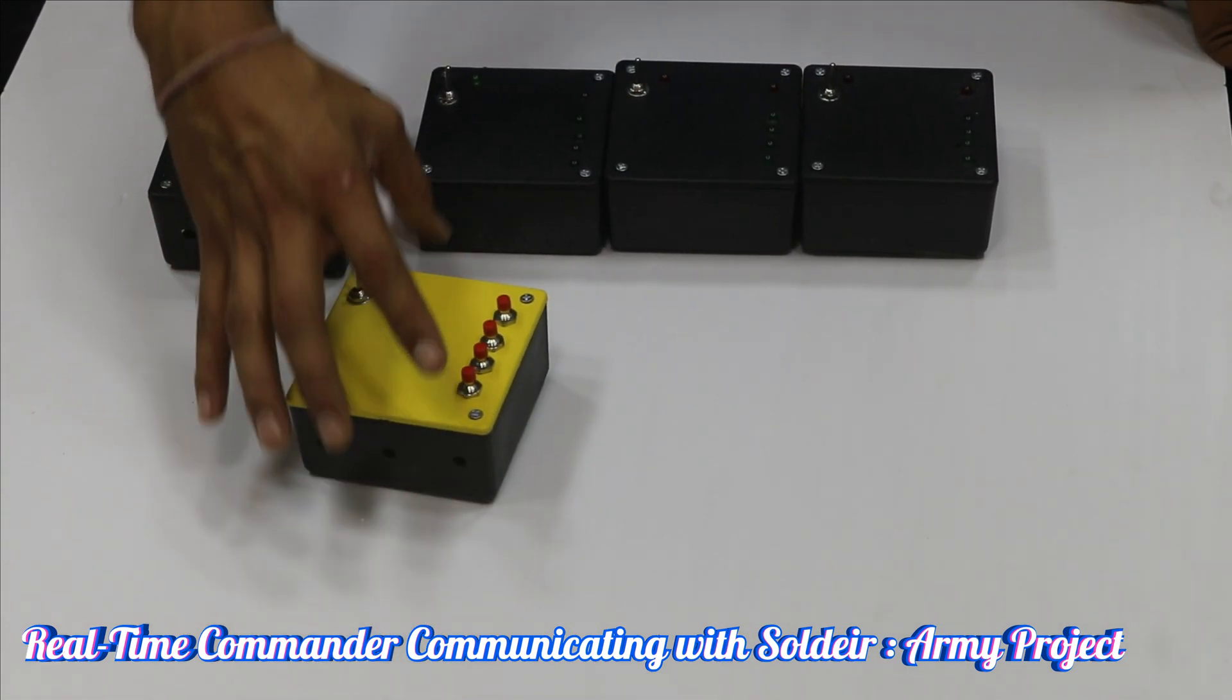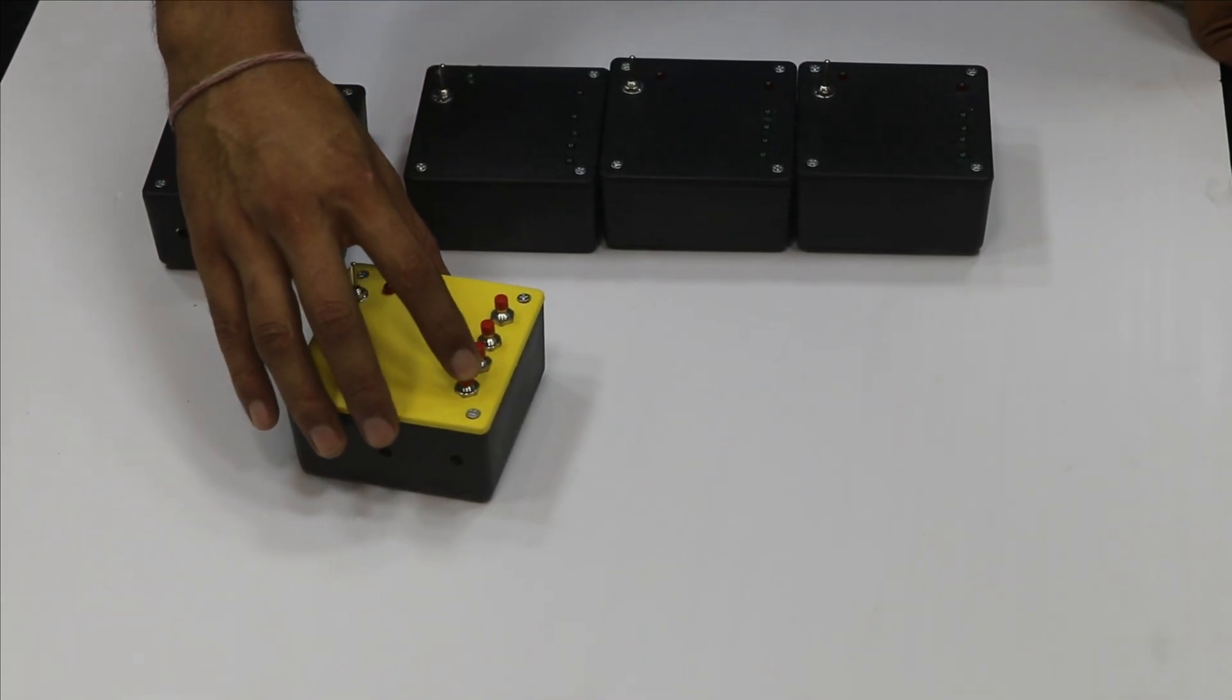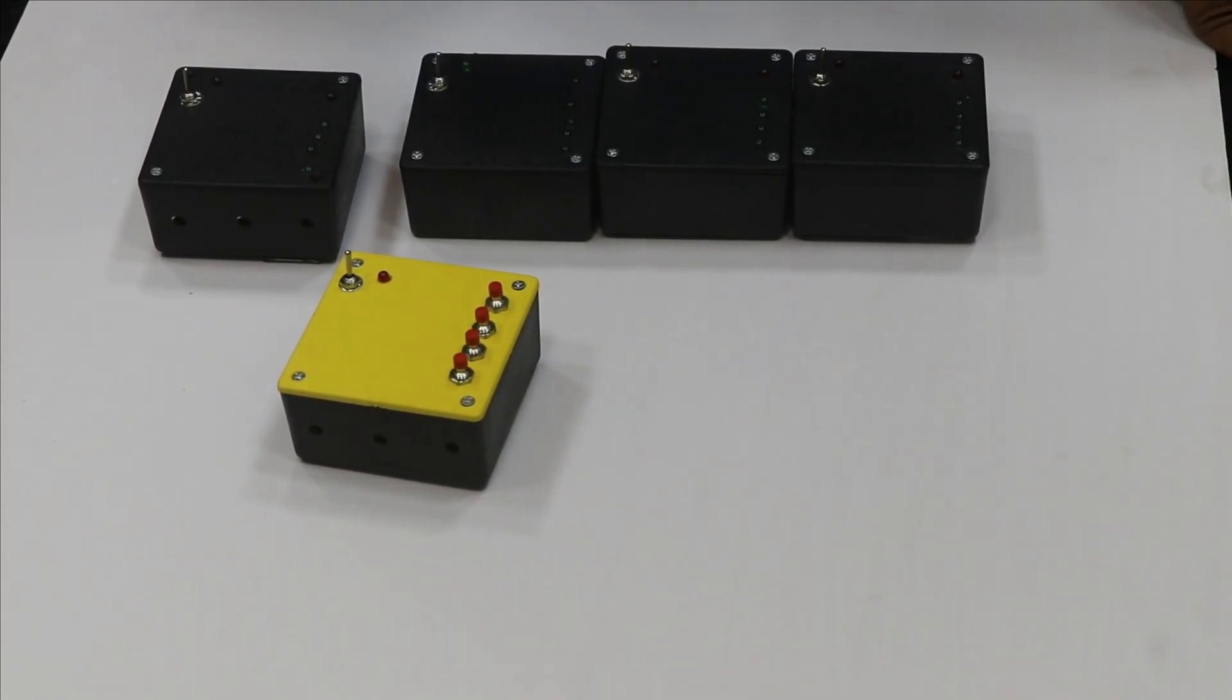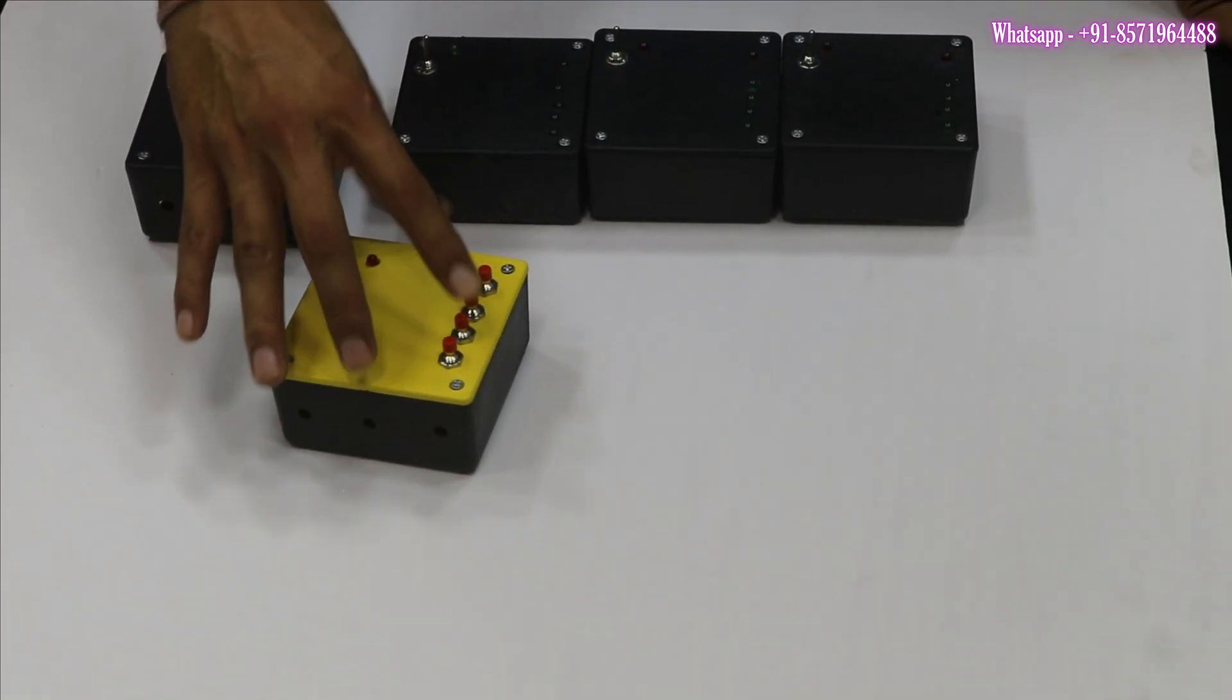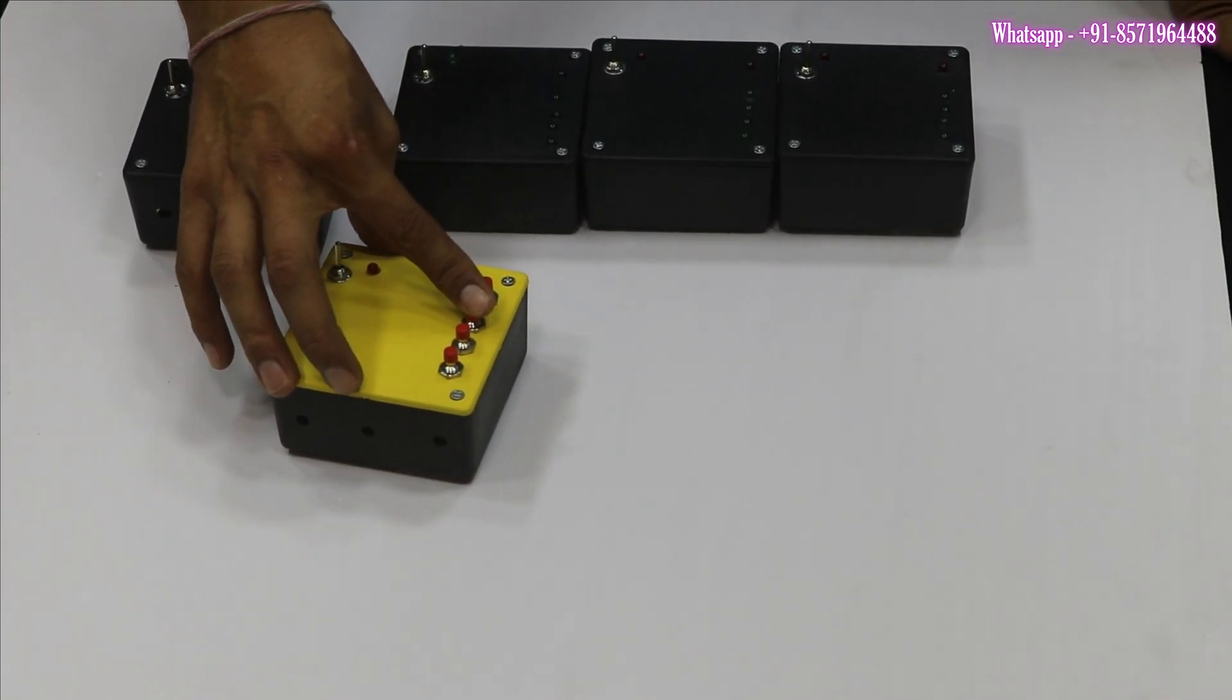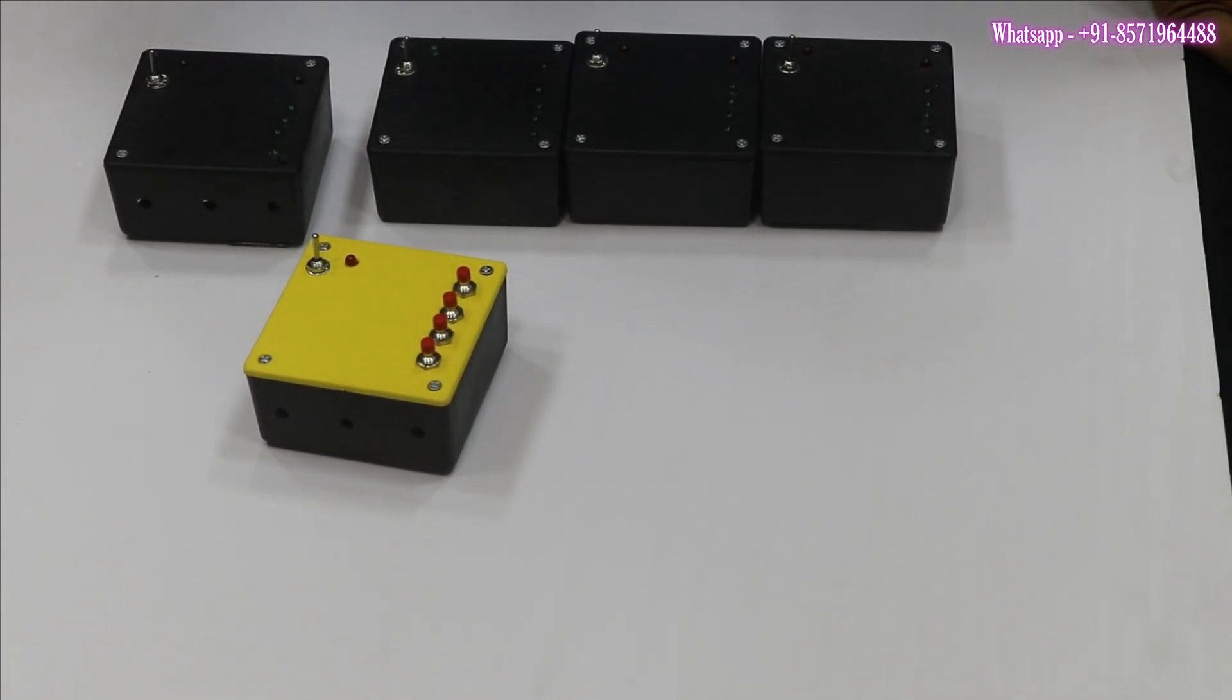If he will press this button during operations, one unit will move in the backward direction or maybe forward direction. If he will move this command then the second team will go in the front direction. If he will press this button then the third team will go in the front direction.